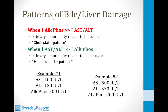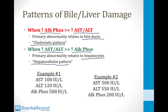I've summarized on the screen here the two characteristic patterns of bile and liver damage, which are very important for Step 1 of your boards and for clinical medicine. We look at the ALKPHOS levels and the AST and ALT levels to determine whether the patient's problem lies in the liver or in the bile ducts. When the ALKPHOS rise is much greater than the rise in AST and ALT, the primary abnormality relates to the bile ducts — this is called the cholestatic pattern, because this is what occurs with obstruction to bile flow. When the rise in AST or ALT is much greater than the rise in alkaline phosphatase, the primary abnormality relates to hepatocytes — this is called the hepatocellular pattern of liver damage.